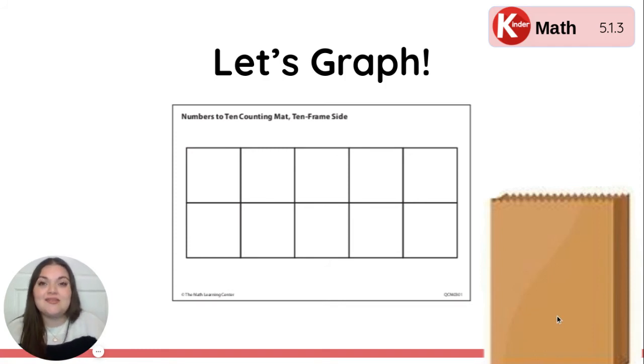In this bag, I have some pattern blocks. We're going to pull some blocks out and graph them. A graph is an easy way to read information. Once we put it on the graph, we'll be able to quickly and easily see how many more shapes we need and which shape we have the most of. Ready? Here we go. Our first shape is... What is that? Yeah, it's a rhombus. Take your rhombus and move it all the way over here to the first spot on your Numbers to 10 counting mat. Grab a rhombus and move it. It will look something like this.